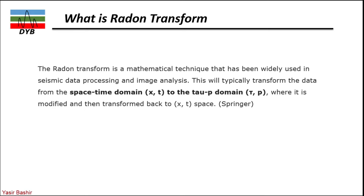Radon transform is a mathematical technique that has been widely used in seismic data processing and also in image analysis. It transforms your data — similar to what FK transform does — converting data from the space and time domain (x-t domain) into the tau-p domain, where tau is travel time and p is slowness.